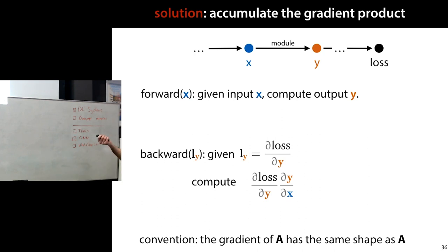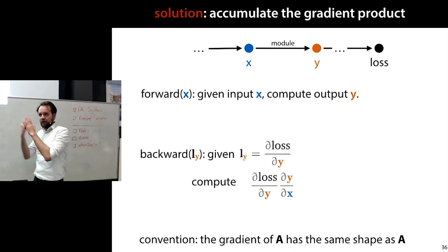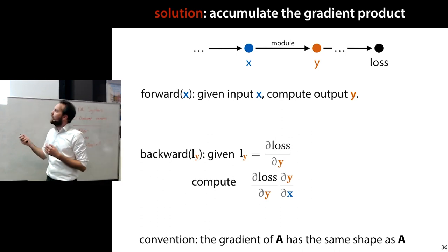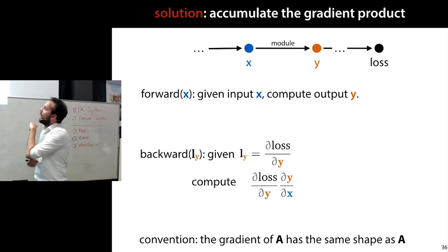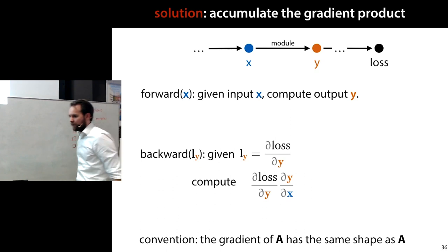We use the convention that the gradient of A has the same shape as A. So the gradient of the loss over y has the same shape as y, and the gradient of the loss over x has the same shape as x. We don't do it as the transpose because we only want to subtract the gradient from the weights during gradient descent — not use it as an operator. This convention makes gradient descent easy since the gradient and the weight have the same shape.